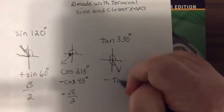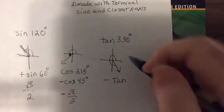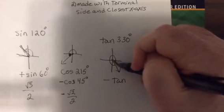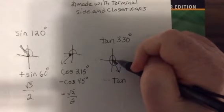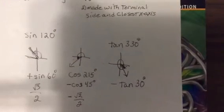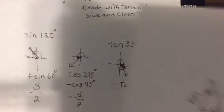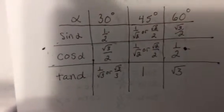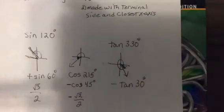Now the reference angle, how many degrees between here? Well this is 330, all the way is 360, so that'd be 30 degrees. And here we go, tangent of 30, that would be square root of 3 over 3.